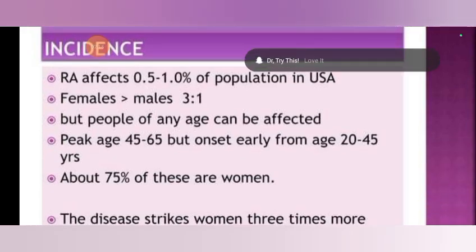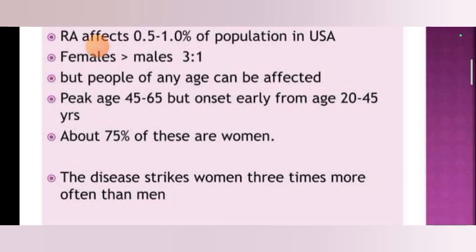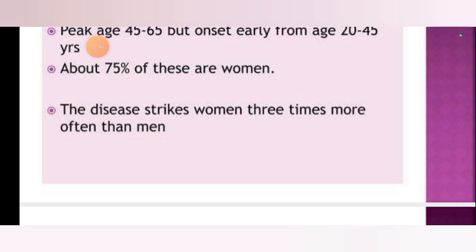RA affects 0.5 to 1.0 percent of the population in the USA. Females are affected more than males at a ratio of 3 to 1, but people of any age can be affected. Peak age of onset is 45 to 65 years, but onset can occur as early as age 20 to 45 years. About 75 percent of those affected are women, and the disease strikes women three times more often than men.